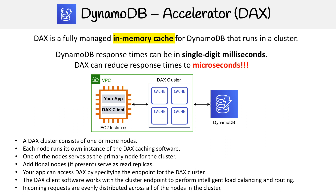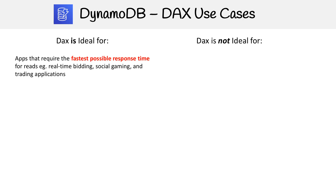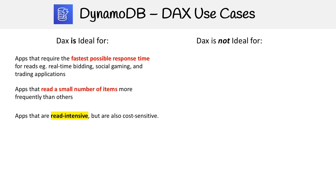Now let's look at the use cases of when and when not to use DAX — what DAX is good for and what it's not good for. DAX is ideal for apps that require the fastest possible response time for reads, such as real-time bidding, social gaming, and trading applications. It's also good for apps that read a small number of items more frequently than others, apps that are read-intensive but cost-sensitive, and apps that require repeated reads against a large data set.